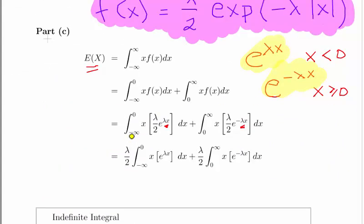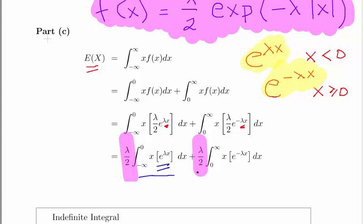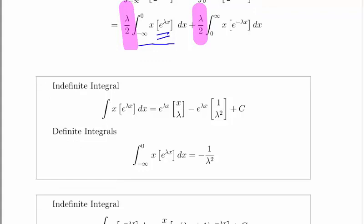In the first case where x is less than or equal to 0, we have the integral from minus infinity to 0 of x times lambda over 2 times e to the lambda x dx. And where x is greater than 0, we have the integral from 0 to infinity of x times lambda over 2 times the exponential of minus lambda x dx. We can take lambda over 2 out of the expression in both cases, leaving x times e to the lambda x and x times e to the minus lambda x respectively — so this is integration by parts.